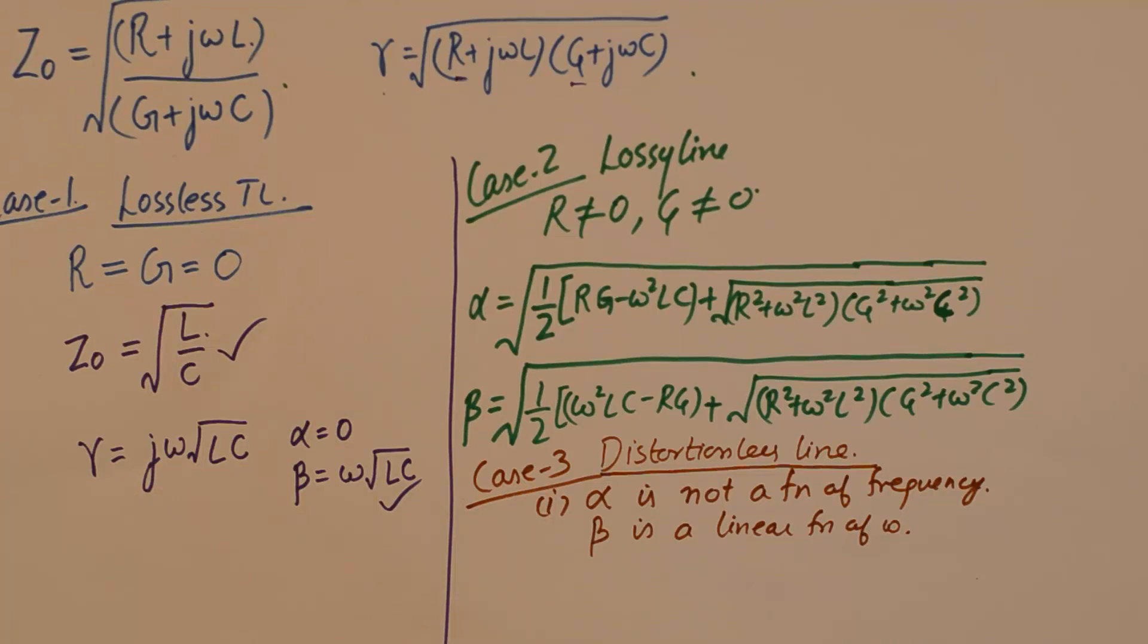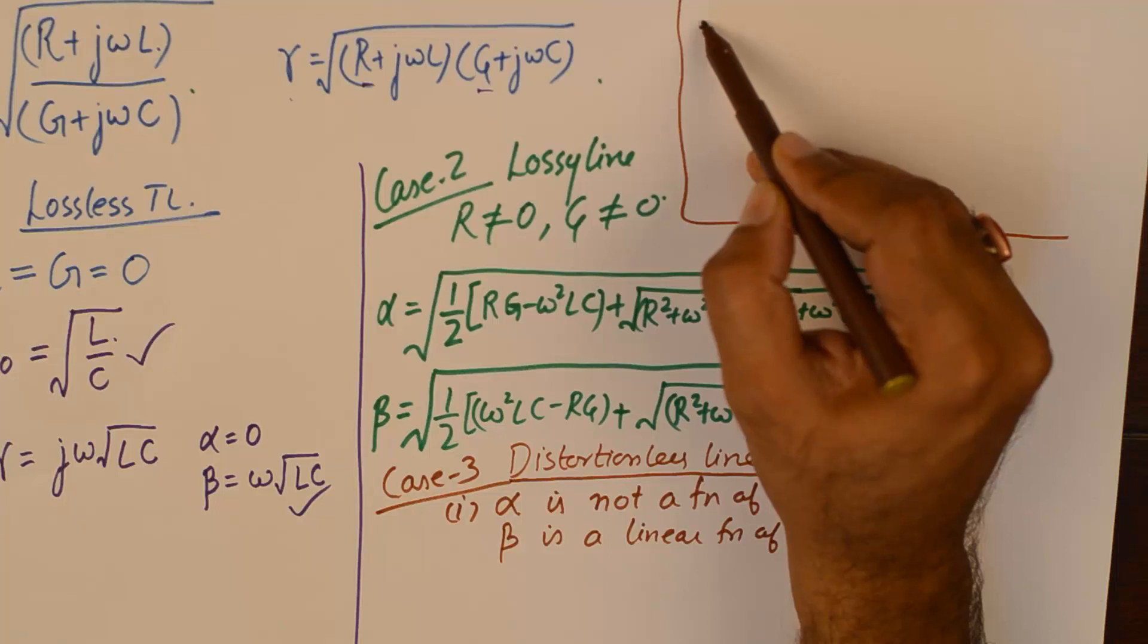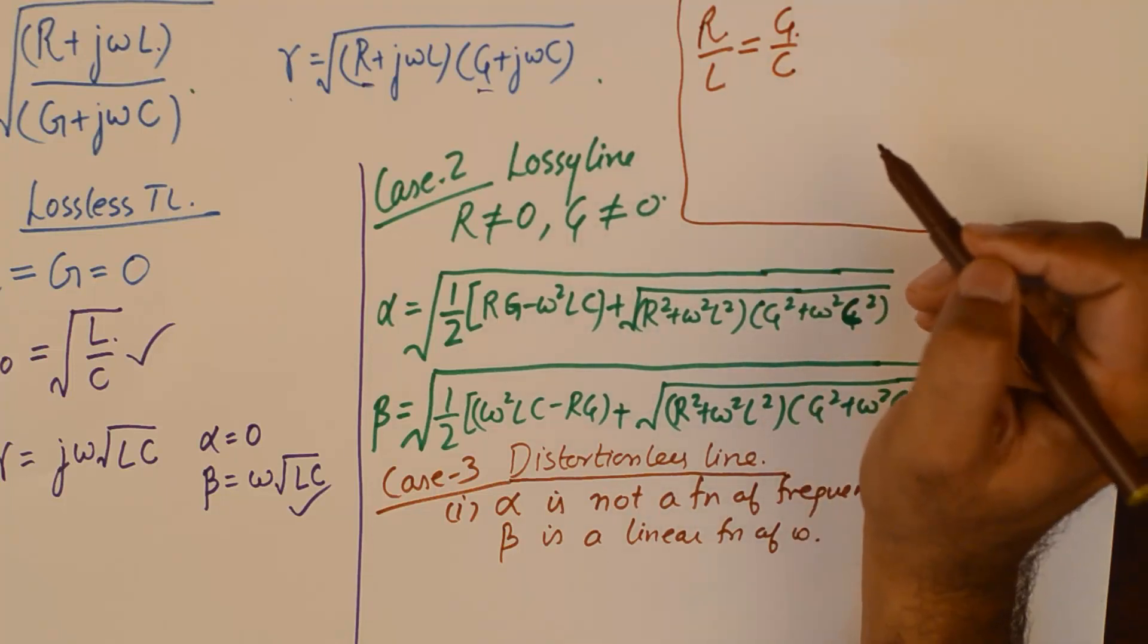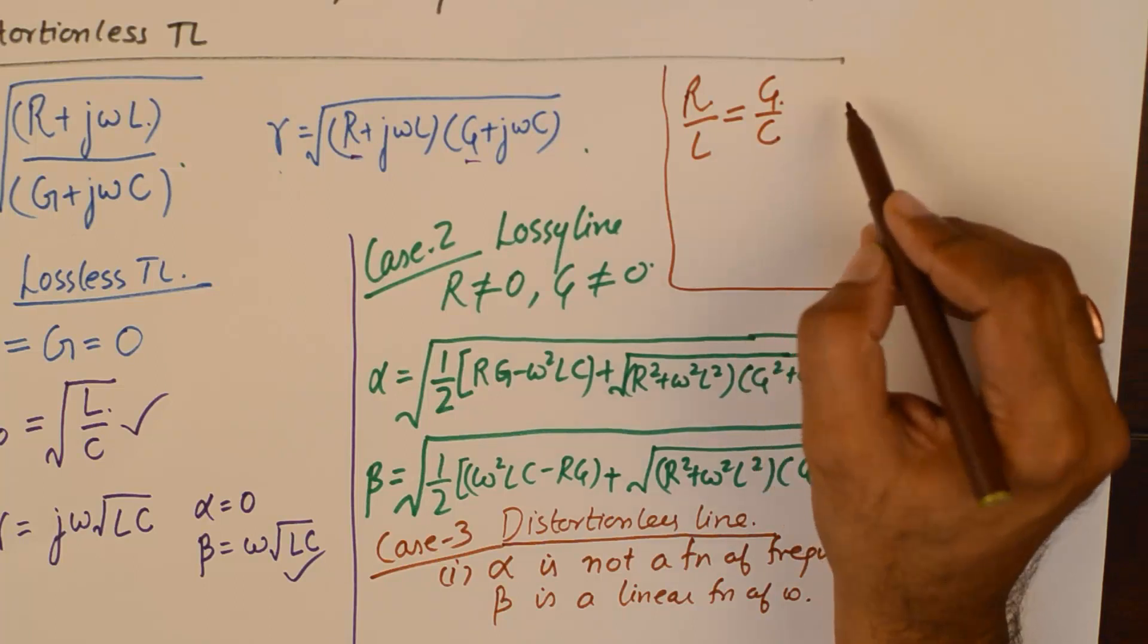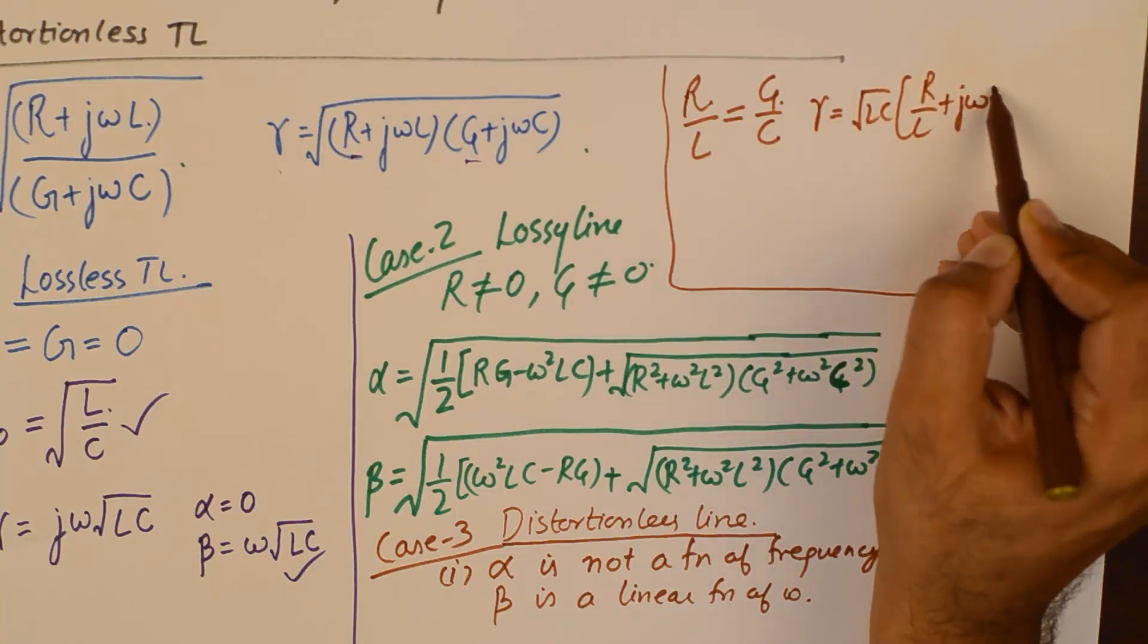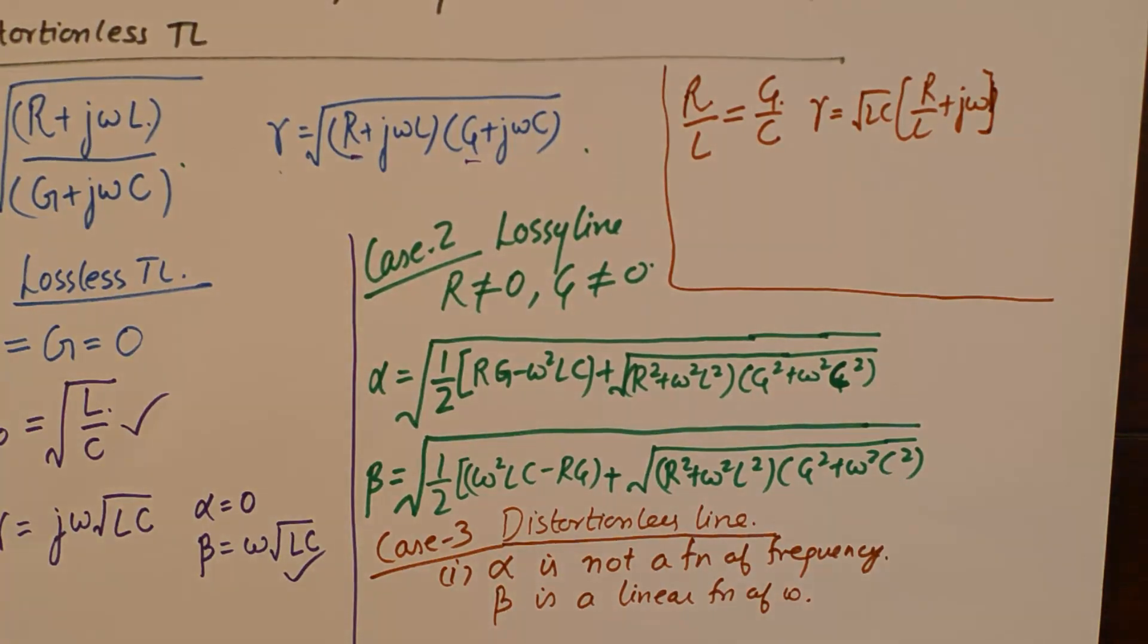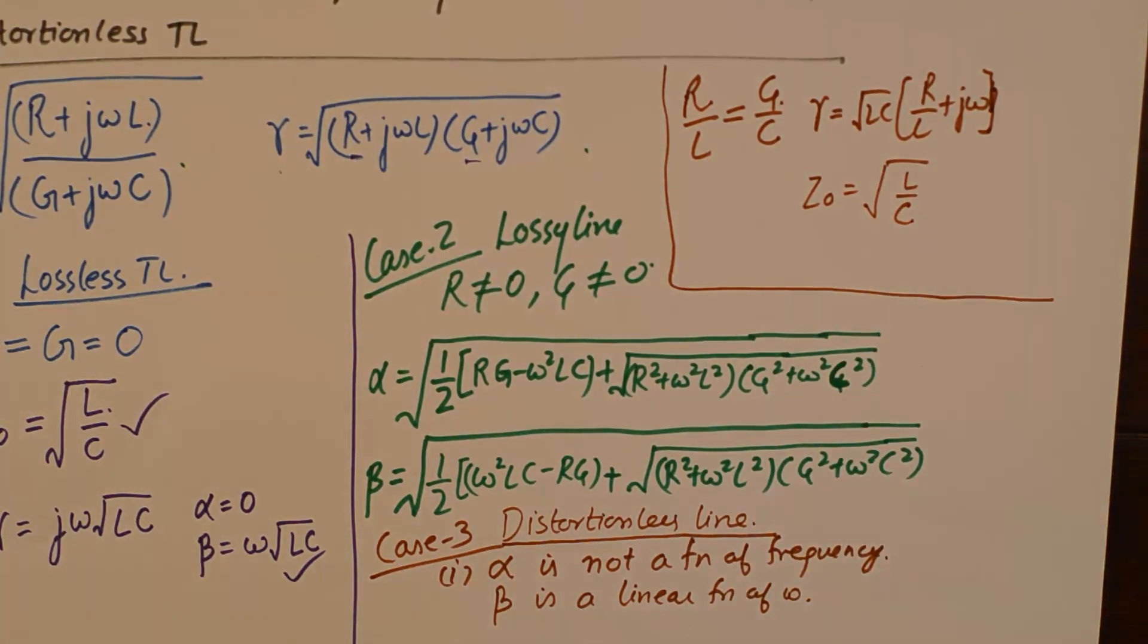The condition for distortionless line is: R/L should be equivalent to G/C. That will make our γ equivalent to √(LC)(R/L + jω). Similarly you can find α and β. Z₀ becomes equivalent to √(L/C), so frequency dependence has vanished.